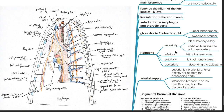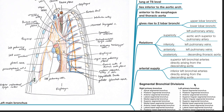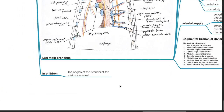Inferiorly: the left pulmonary veins. Anteriorly: the left pulmonary veins. Posteriorly: the descending thoracic aorta. Arterial supply: the superior and inferior left bronchial arteries, both directly arising from the descending aorta. In children, the angles of the bronchi and the carina are equal.